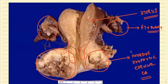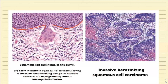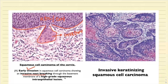Now, can you appreciate — this is the basement membrane — and a part of the tumor has come out through it. This is the invasion occurring. This was an H-CIL, a carcinoma in situ, and we can appreciate the invasion of the cervical stroma. There is early invasion showing an invasive nest breaking through the basement membrane of high-grade squamous intraepithelial lesion.